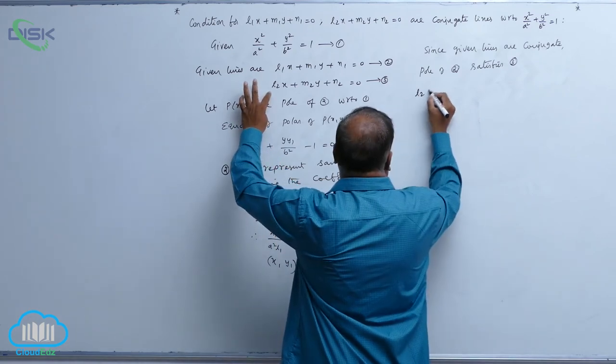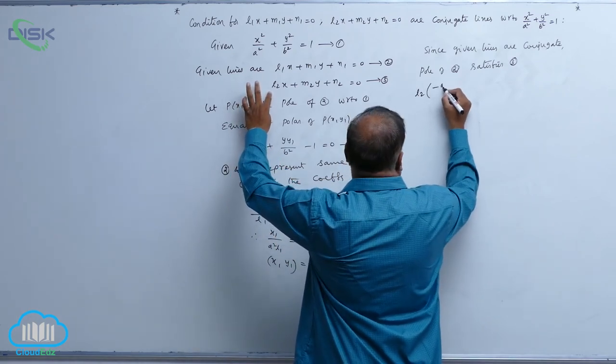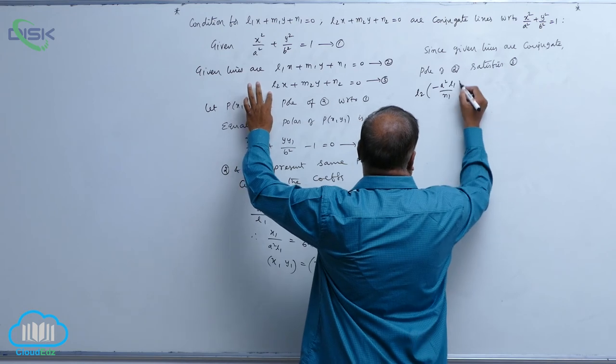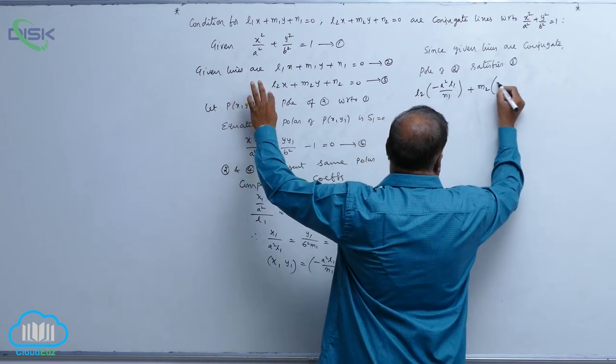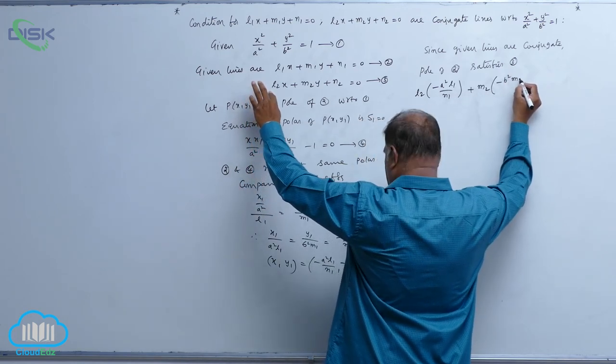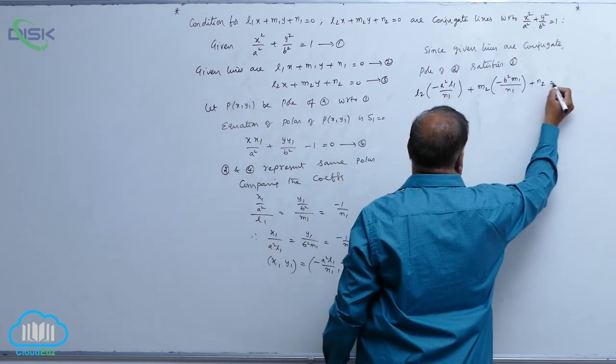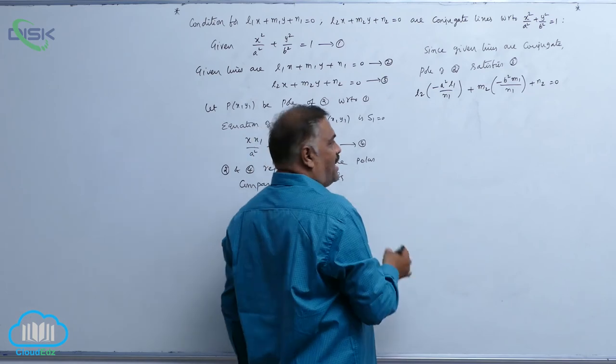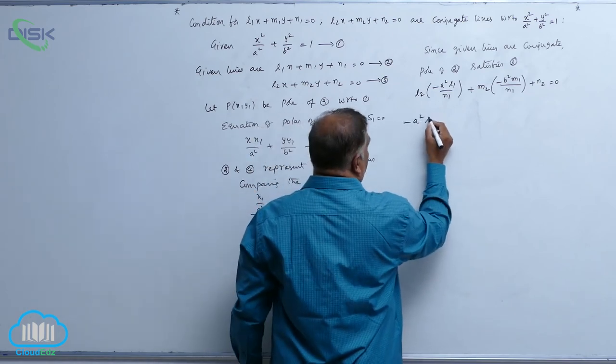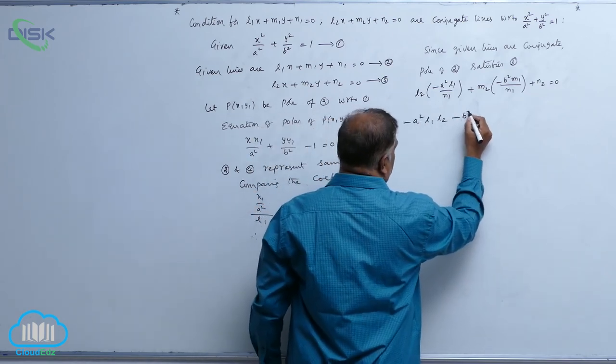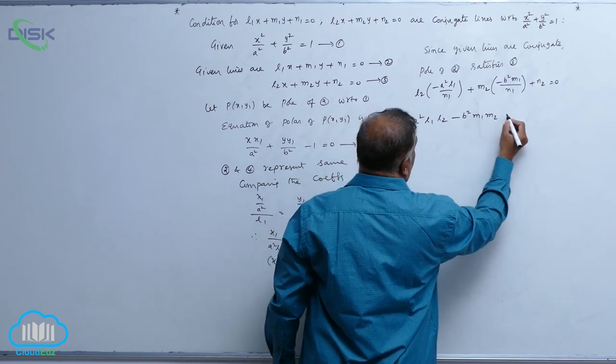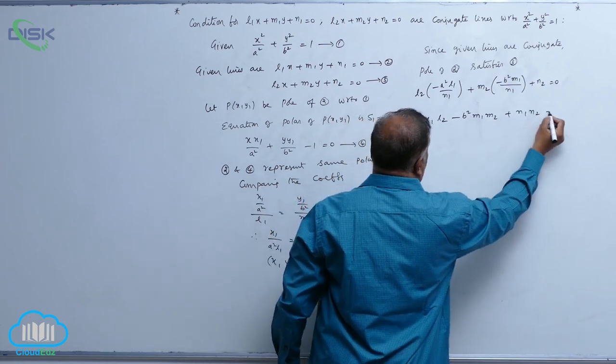That is, l2 into minus a square l1 by n1 plus m2 into minus b square m1 divided by n1 plus n2 is equal to 0. Take lcm minus a square l1 by n2 minus b square m1 by n1 by n2 plus n1 by n2 is equal to 0.